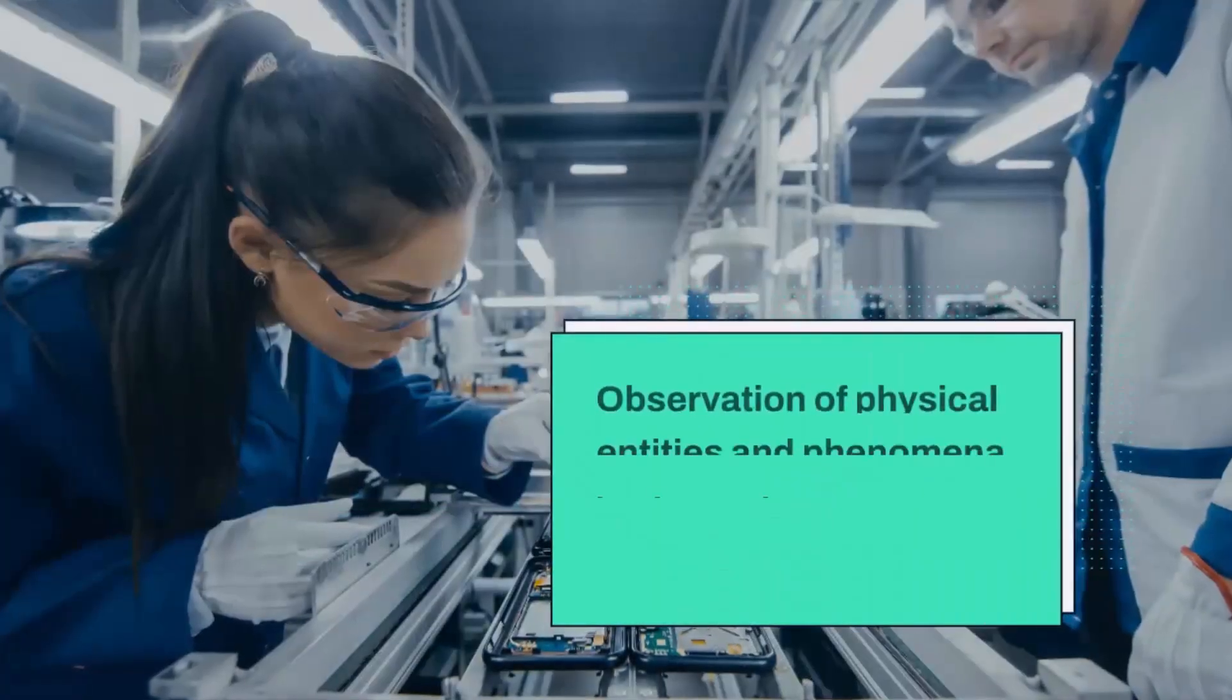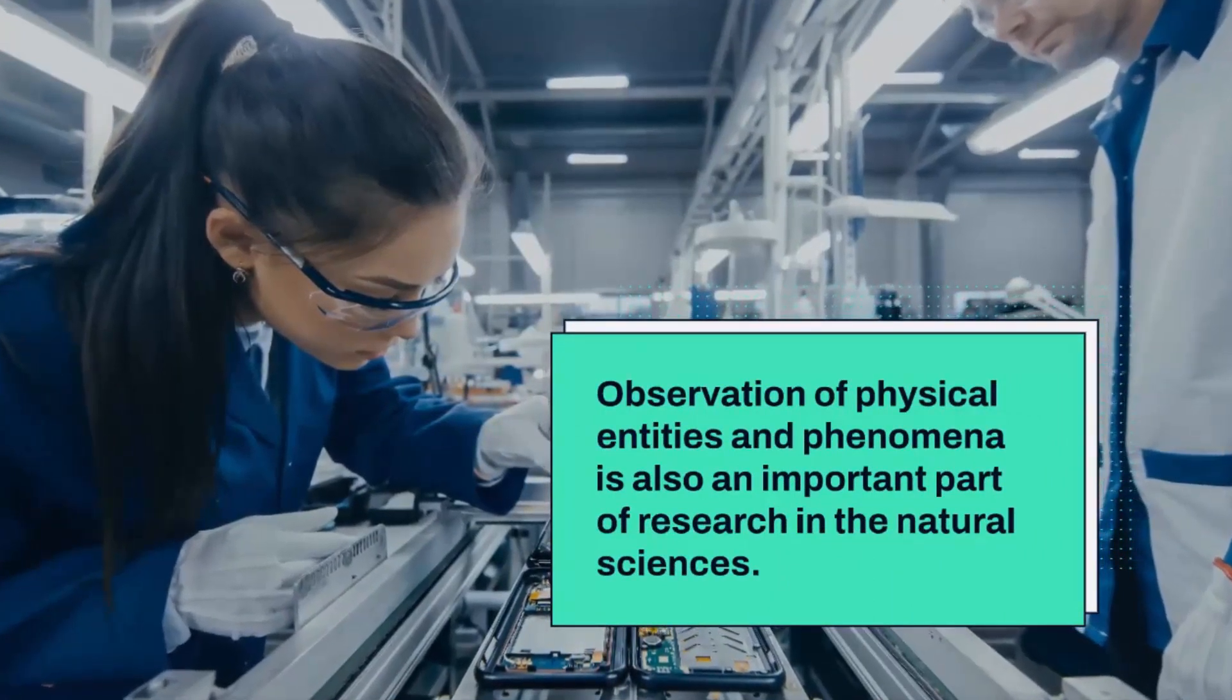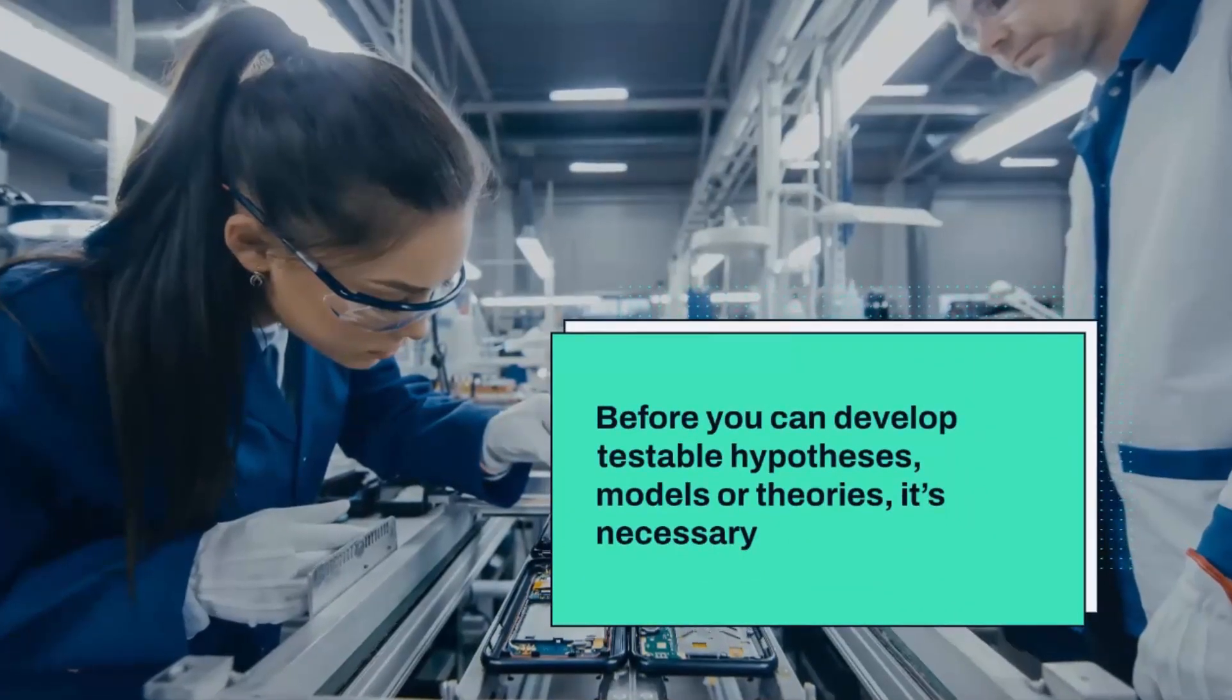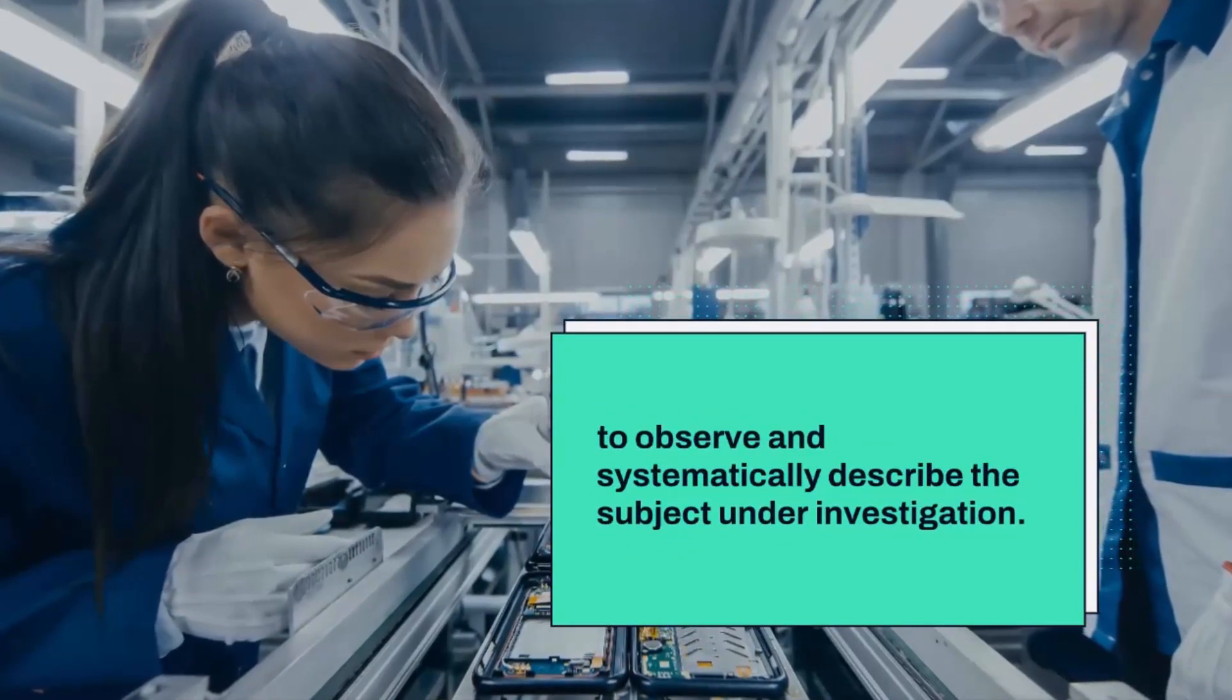Observation of physical entities and phenomena is also an important part of research in the natural sciences. Before you can develop testable hypotheses, models or theories, it's necessary to observe and systematically describe the subject under investigation.